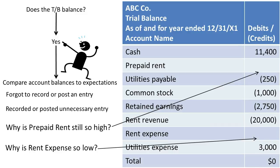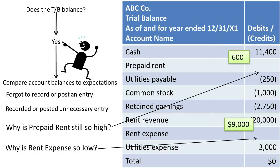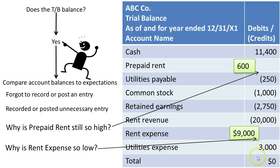Our analytical procedures are dependent on knowing our business and possibly using budgets and other information. By properly adjusting Prepaid Rent down and Rent Expense up, the trial balance will still balance — but now it's balancing using the corrected, adjusted numbers we want to put on our financial statements.